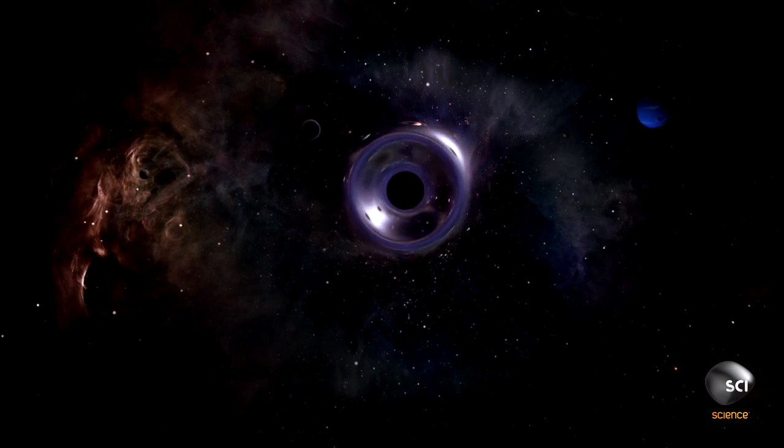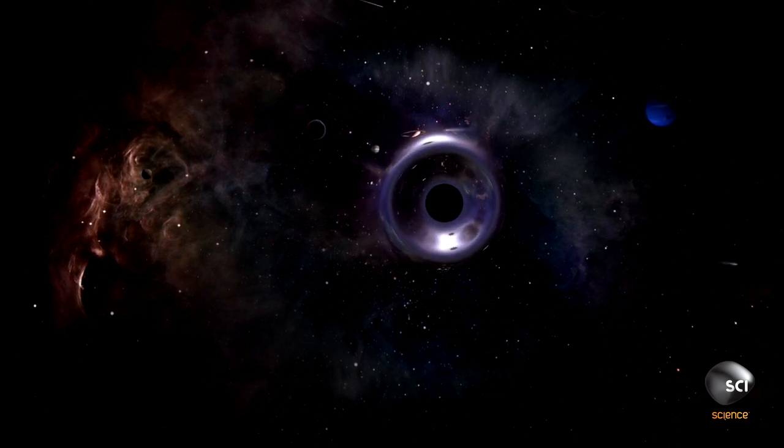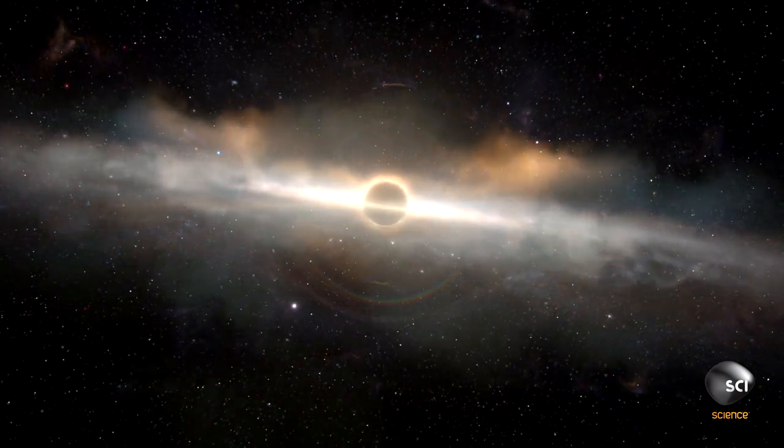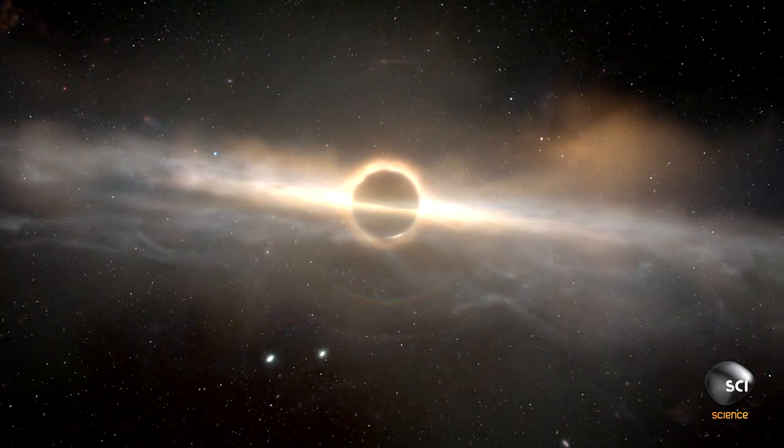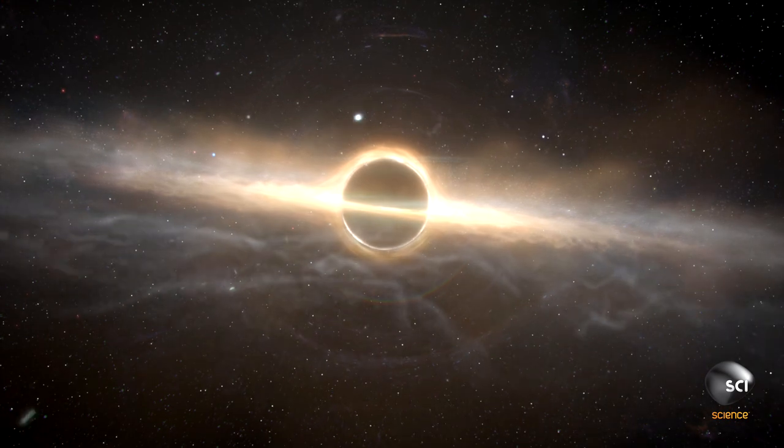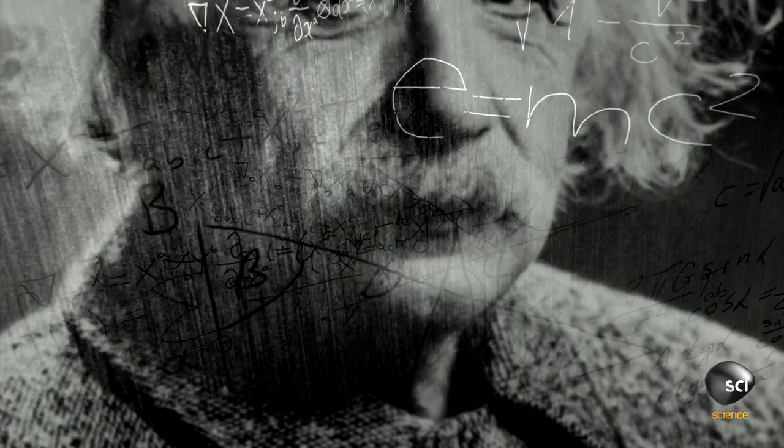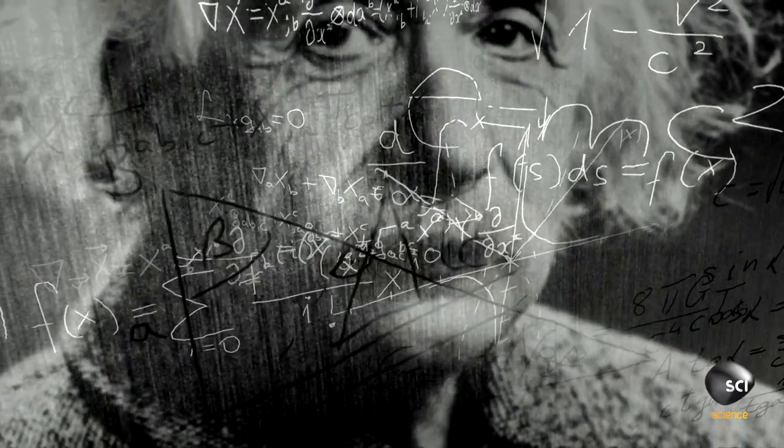When something has mass, it has the ability to bend space. Before Einstein's theory of general relativity, scientists imagined space as a stage set on which the action played out.